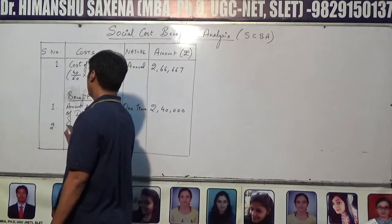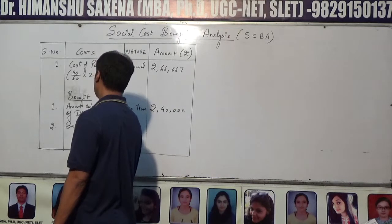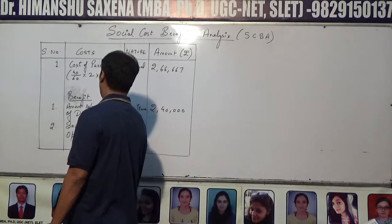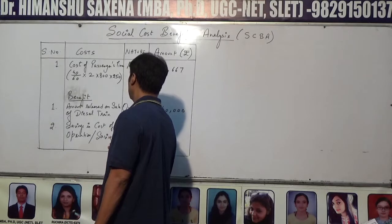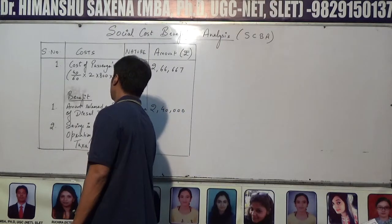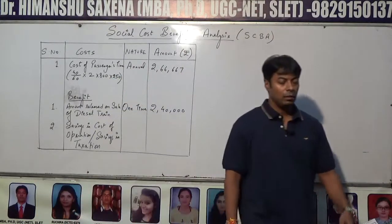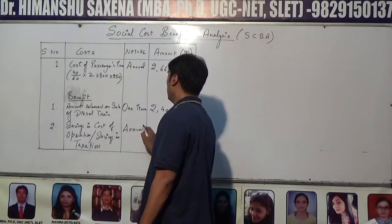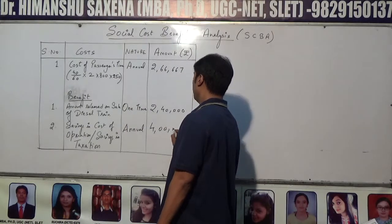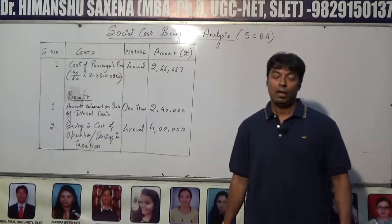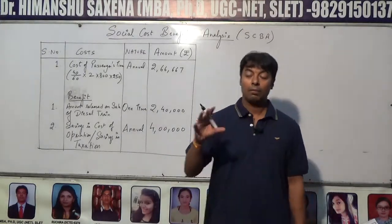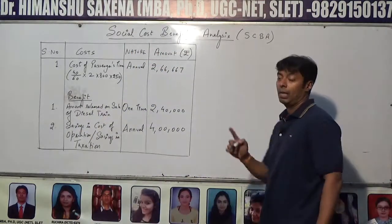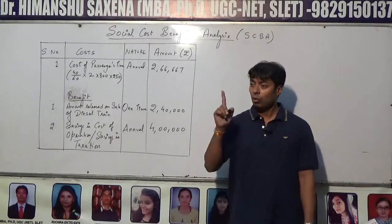Note down the next entry: savings in cost of operation — this can also be written as savings in taxation. Nature: annual. Value: Rs. 4 lakh. Some of you might be wondering where this came from — this is the most important entry, and its adjustment is explained in the working notes. Go to the first paragraph.